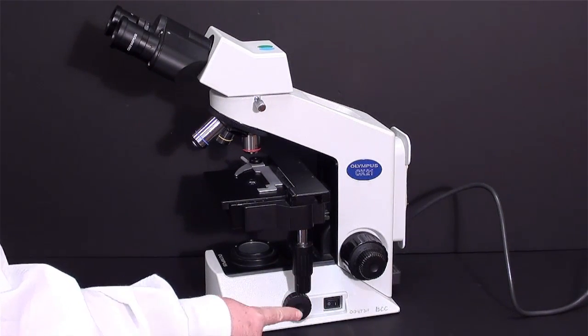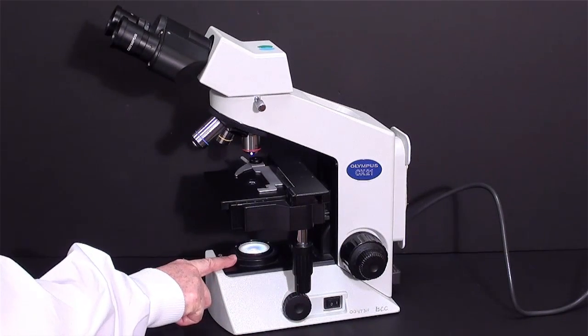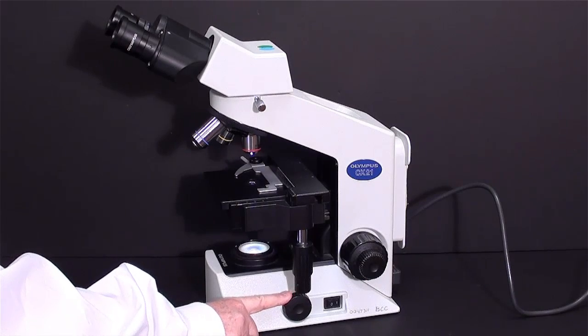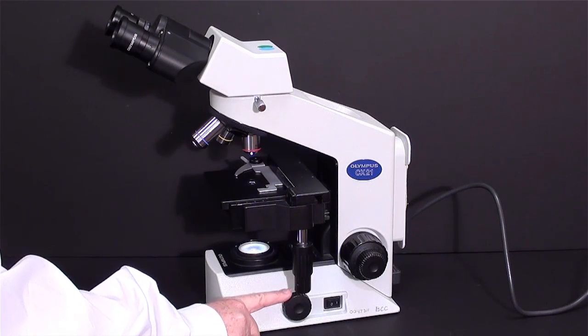This is the light control. This is the on and off switch. I'll turn on the light. You can see the light sources here. If I want to dim the light or increase the amount of light we're seeing.